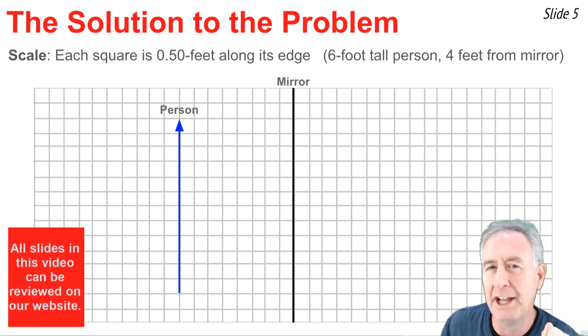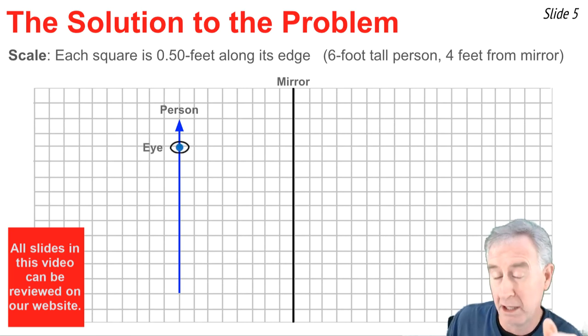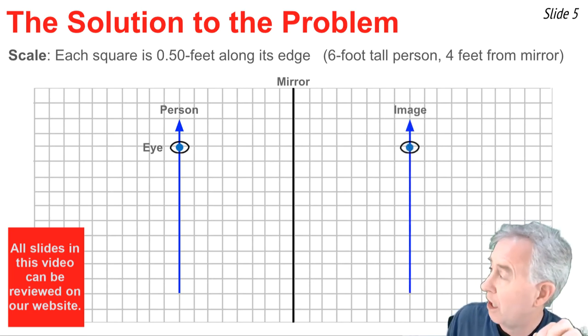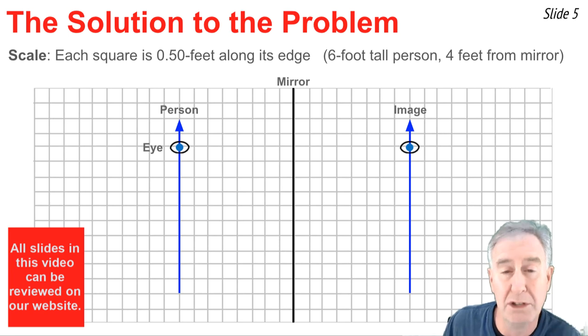We're going to put an eye on this person up near the top, because this person is going to use that eye to view the image of his object in the mirror. We will draw the image on the opposite side of the mirror, the same distance that the object is in front of the mirror. That's eight squares away.